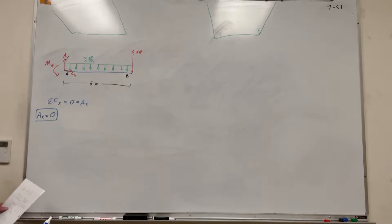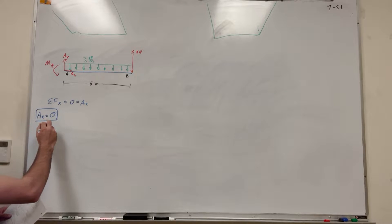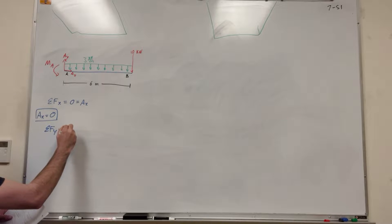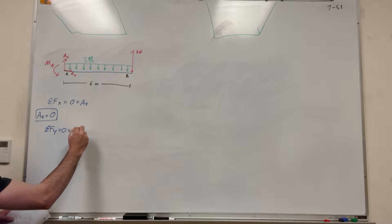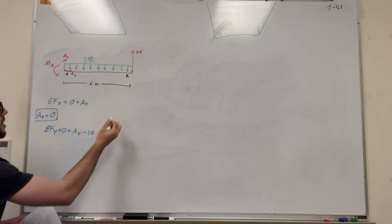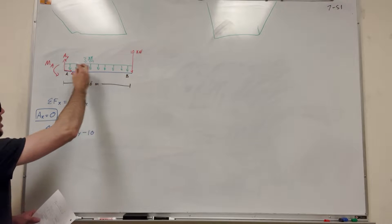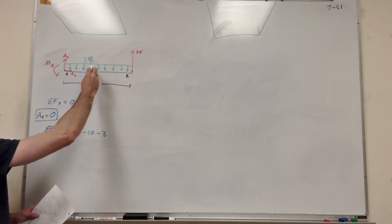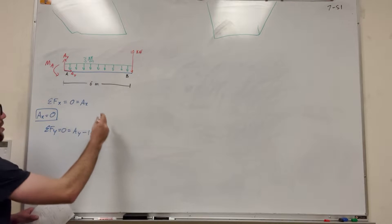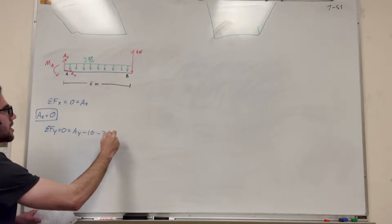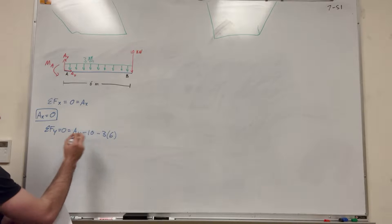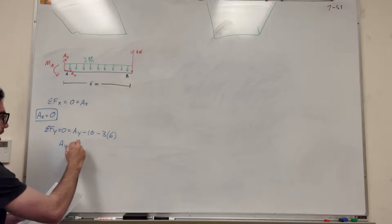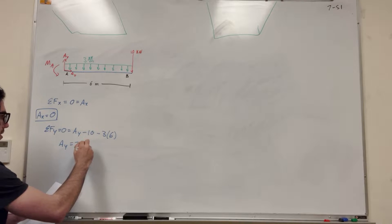So let's go ahead and solve for A of Y. The sum of the forces in the Y is equal to zero. It's going to be A of Y pushing up, and then minus 10 from here. And then there's also this distributed load, so it'll be negative 3 — it's 3 kilonewtons per meter — so it's going to be 3 times 6, because it's 6 meters long. You move the A of Y over, and you find A of Y is equal to 28 kilonewtons.